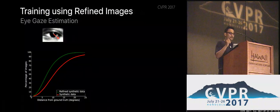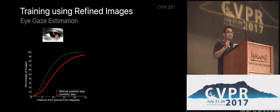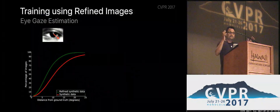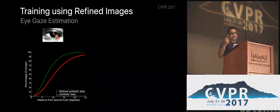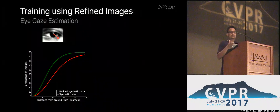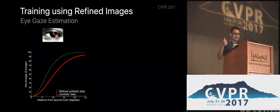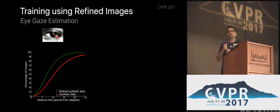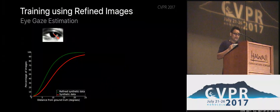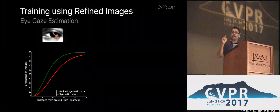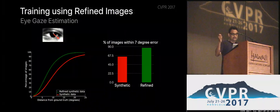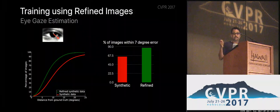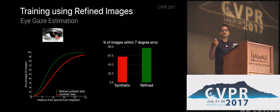Our goal was not just to add realism but to improve ML model performance. We trained a gaze estimation network on synthetic images versus refined images. The x-axis is the angular distance between the predicted and ground-truth gaze direction; the y-axis is the percentage of images within a particular error threshold. At a seven-degree error threshold, training with refined images yields roughly a 22% performance improvement over training with synthetic images — which is a lot.